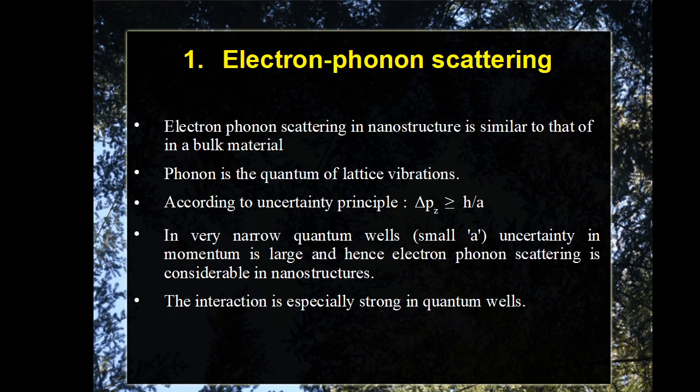The first scattering mechanism is electron-phonon scattering. A phonon is the quantum of lattice vibrations — a very minute energy quantum of lattice vibrations. Due to these vibrations, there can be interference between electrons and the vibrations, resulting in scattering. Electron-phonon scattering in nanostructures is very similar to that occurring in bulk materials.